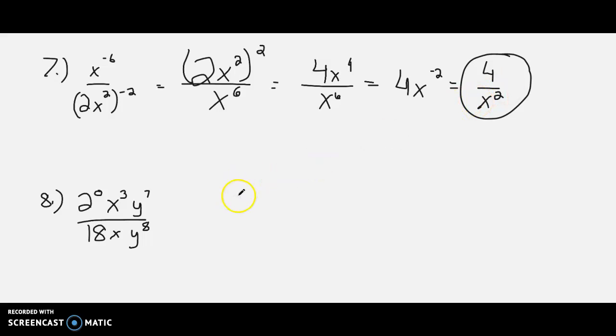All right, number 8. Now, notice what we have. 2 to the 0 power x to the 3rd, y to the 7th, 18x, y to the 8th. Anything to the 0 just becomes 1. So the only thing we really have here is 1 over 18. We'll have an x squared on the top.